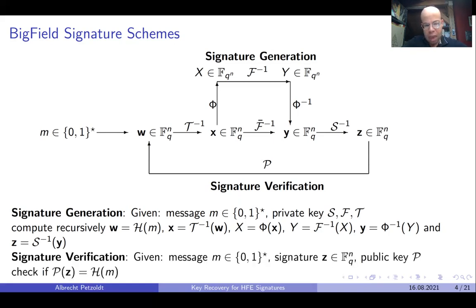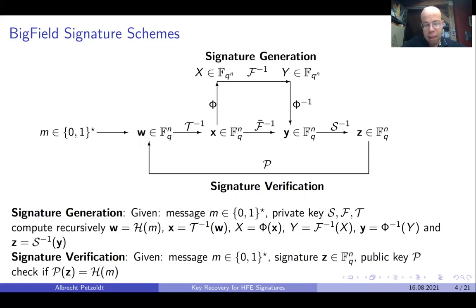For signature verification, we are given again the message m as a string of arbitrary length, a signature in F_q^n, and the public key. We just have to check if P(z) is equal to H(m). If this is fulfilled, then the signature is accepted; otherwise it is rejected.